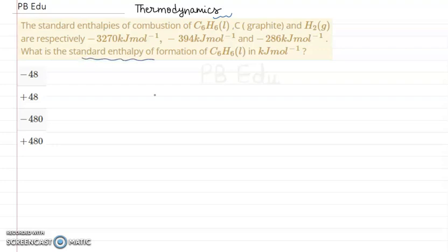We have to calculate the standard enthalpy of formation of C6H6. The standard enthalpy of formation refers to the formation of one mole of the compound from its stable elemental forms — carbon exists as graphite and hydrogen exists as H2 gas. Balancing the formation reaction gives us 6 carbons and 3 H2 on the left-hand side.